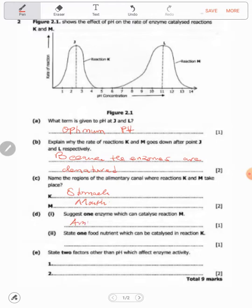State one food nutrient which can be catalyzed in reaction K. Reaction K occurs in the stomach, so one of the food nutrients that can be catalyzed in reaction K is proteins. Two factors other than pH which affect enzyme activity: temperature and substrate concentration.